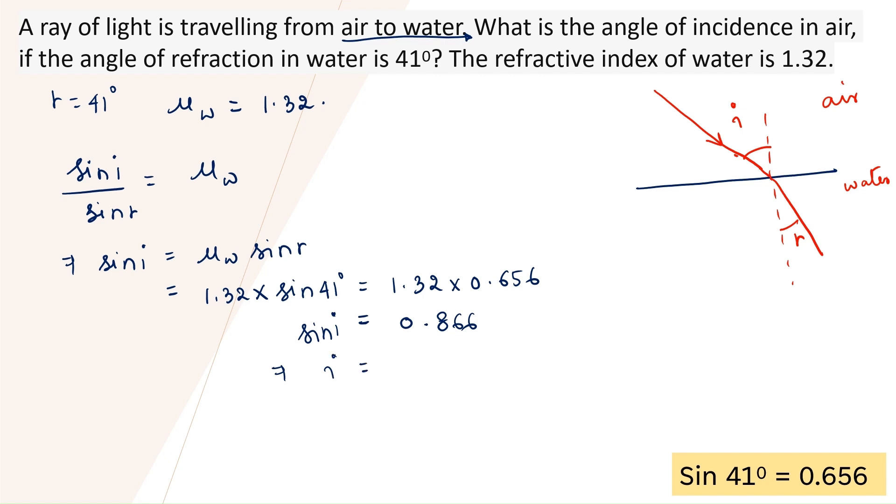So, i is equal to, okay, by the way, 0.866, I can remember this, is approximately equal to root 3 by 2. So, sine i is root 3 by 2. Sine i is approximately root 3 by 2.